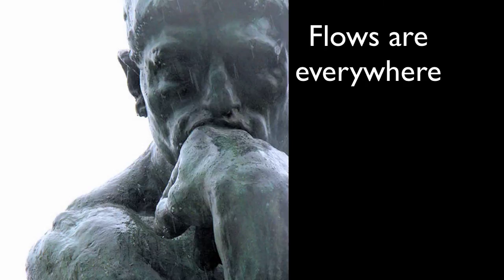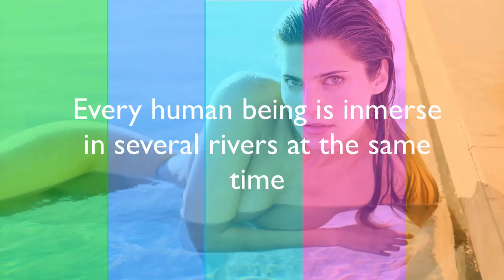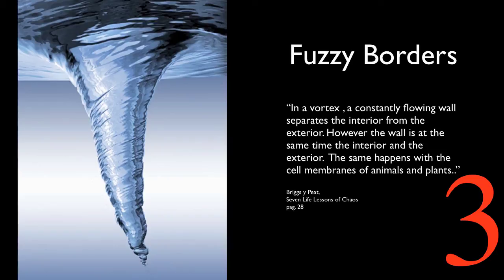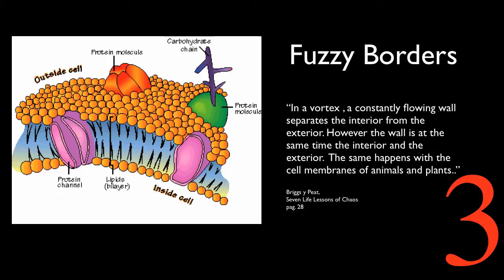Sunlight converts into energy that flows through our body when we ingest food. Flows are present when we think, act, love, communicate. Metaphorically speaking, every human being is immersed in many rivers at the same time. Now it's time to briefly explain fuzzy borders, the third characteristic of vortices.